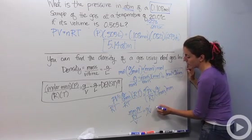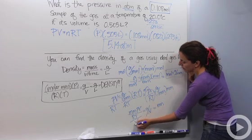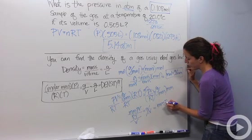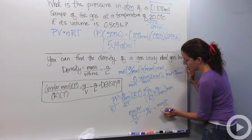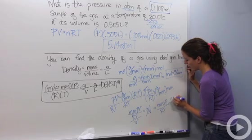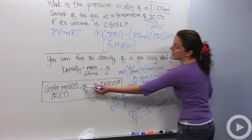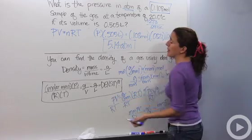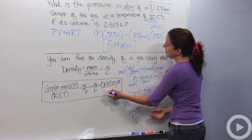And I get molar mass times pressure over RT equals grams over volume, which is what I have written here, which in other words is grams over liters, we know volume's in liters, which is our density. Yay, we found density using PV equals nRT, our ideal gas law.